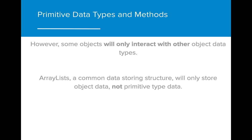One problem that comes from having both primitive and reference types is that some objects will only interact with other object data types. ArrayLists, for example, are a common data storage type that will only store object data types, not primitive values.